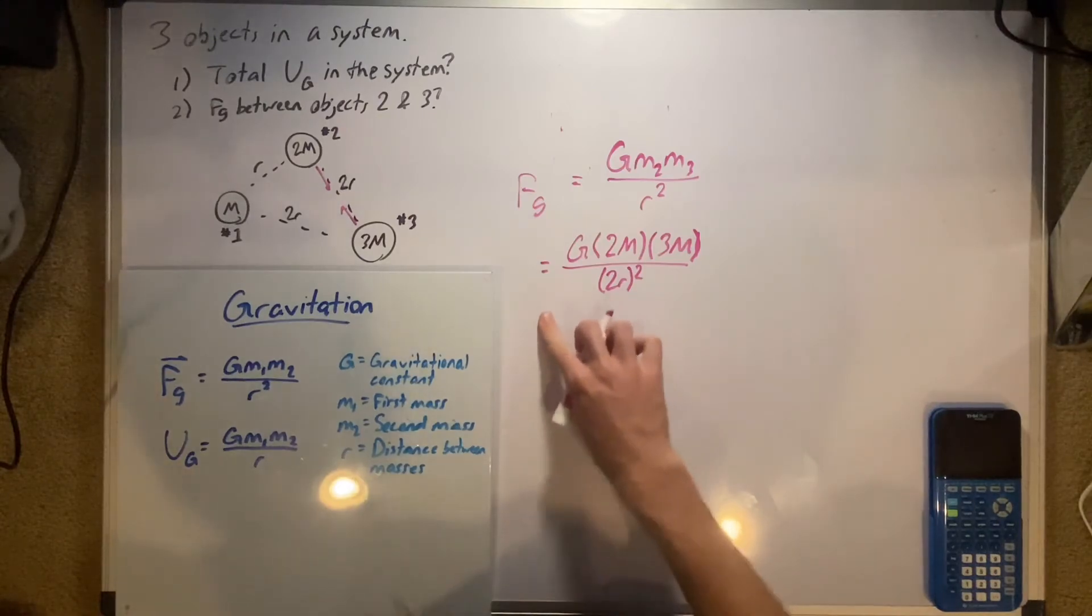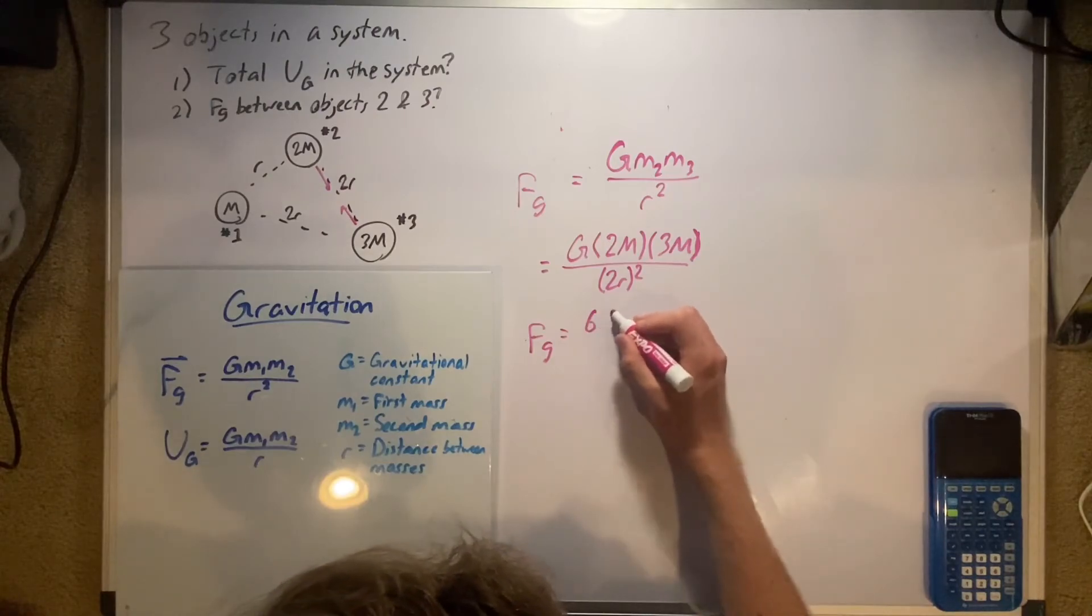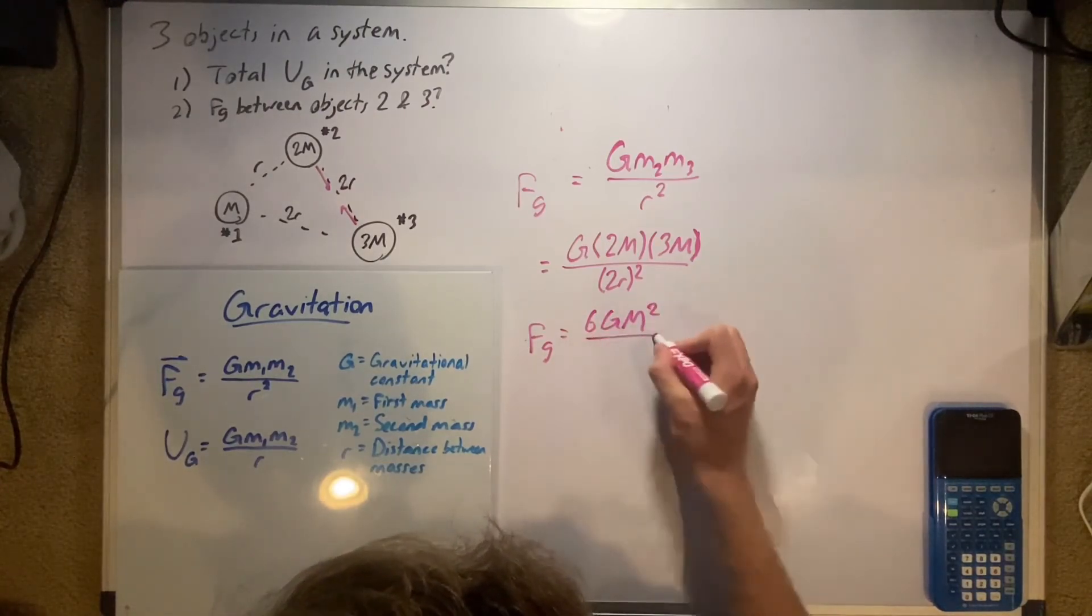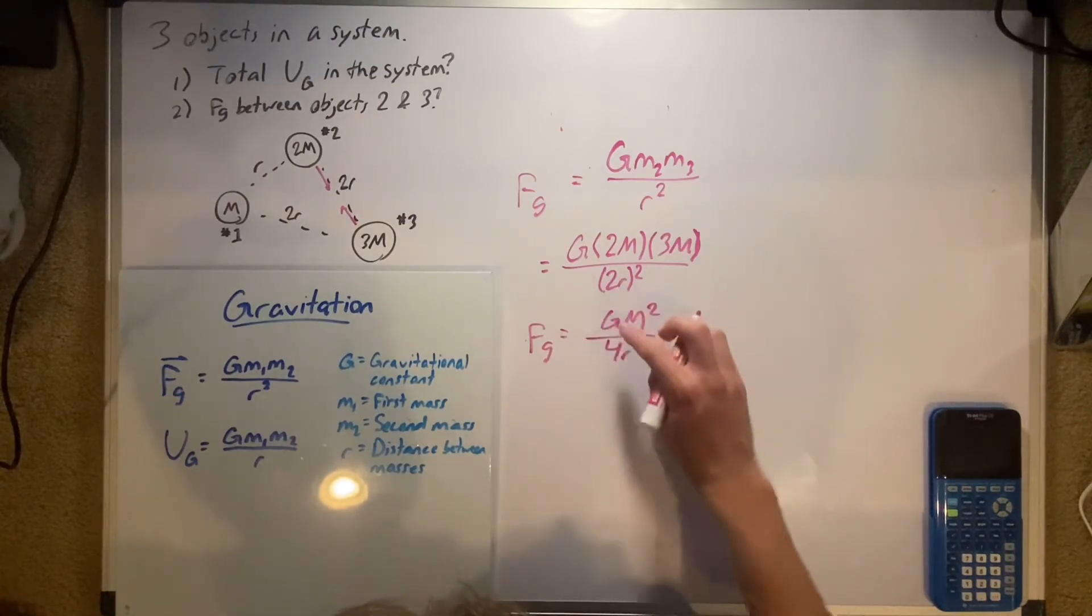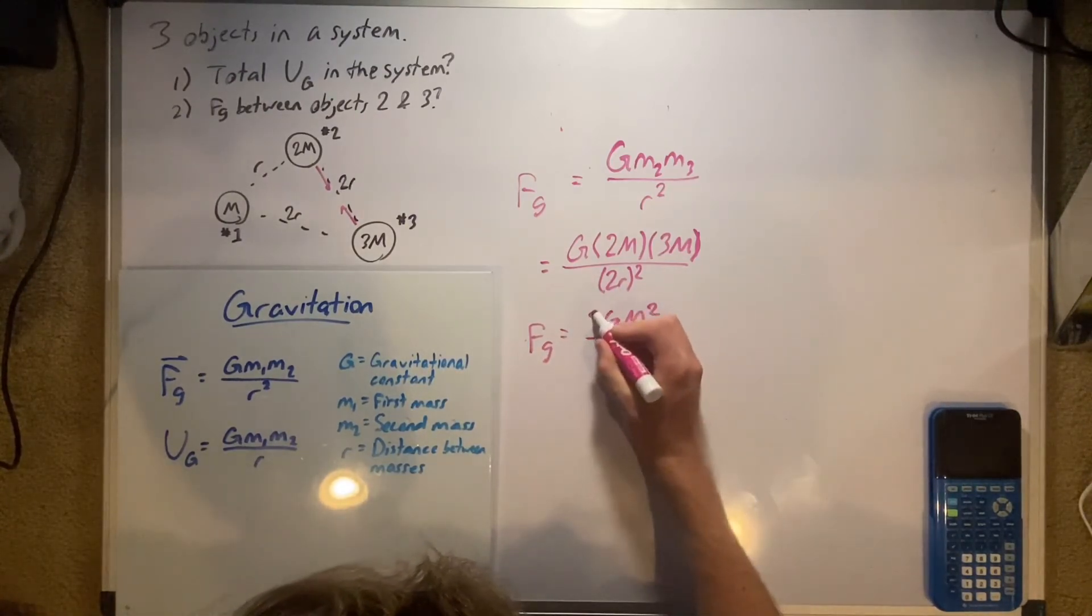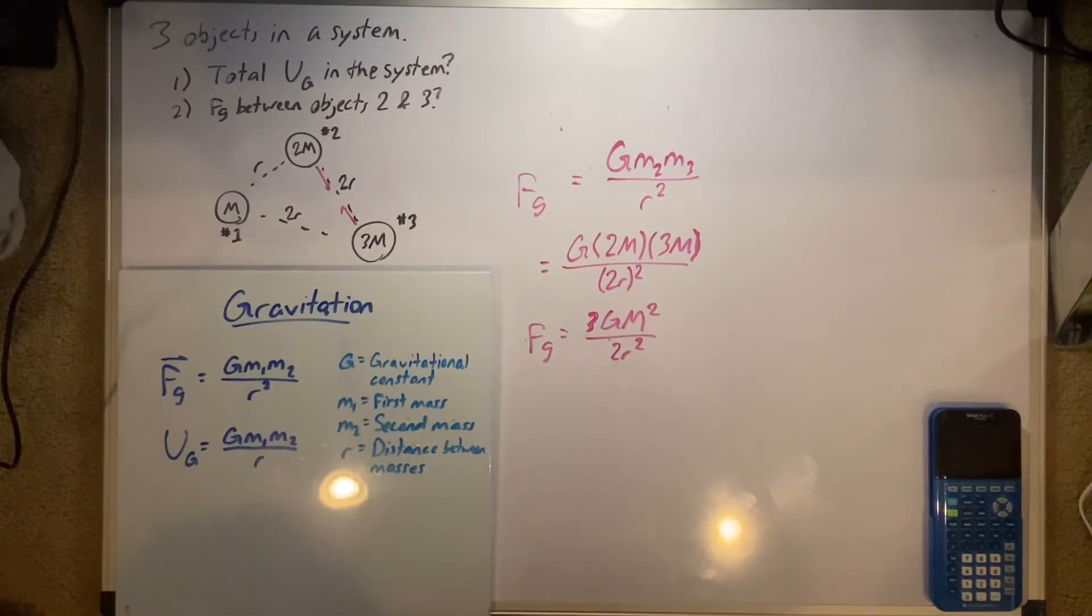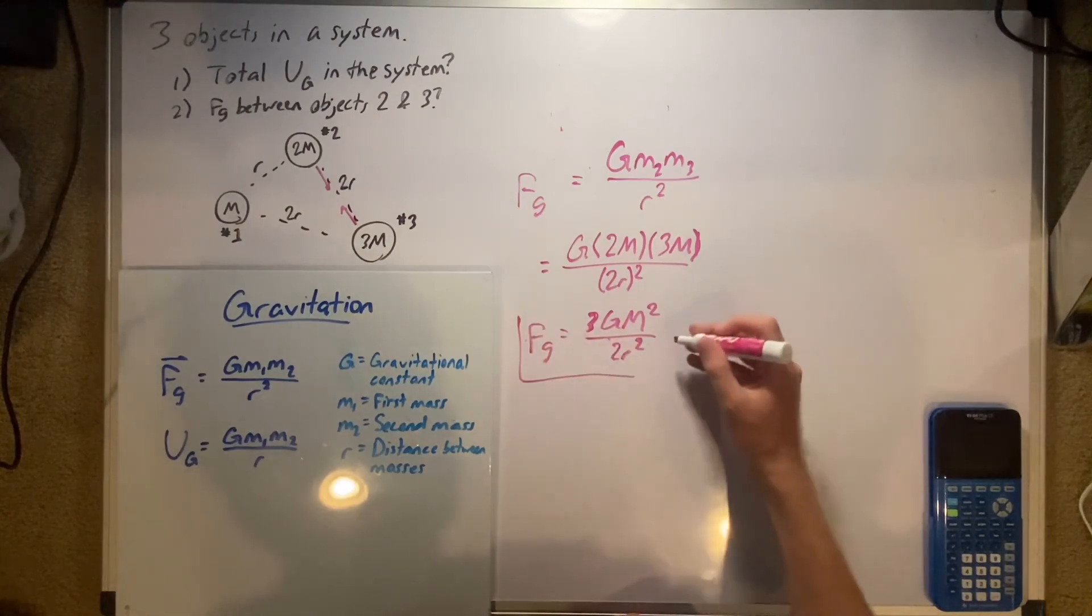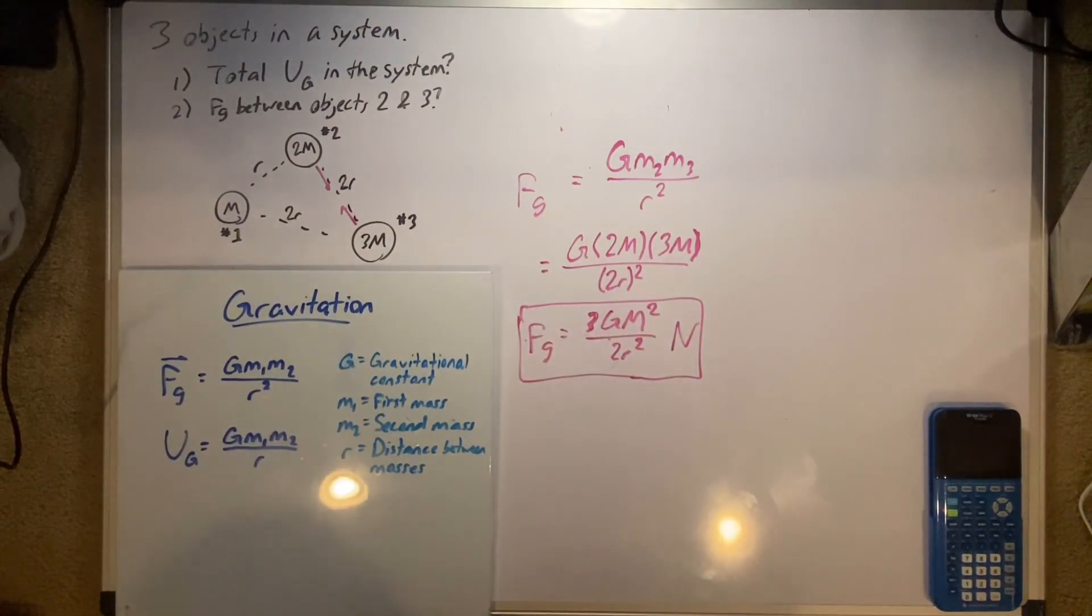So that is equal to big G times two M times three M all over two R squared. So the force of gravity is equal to six G M squared over four R squared, which simplifies to three over two. And that here is our force of gravity. This would be in Newtons. That there is our force of gravity. And that's how you do the gravitation part to physics.